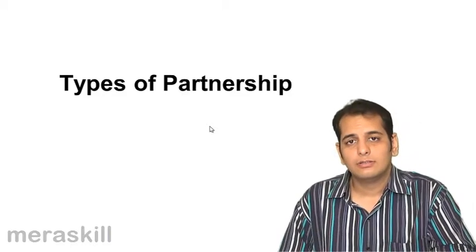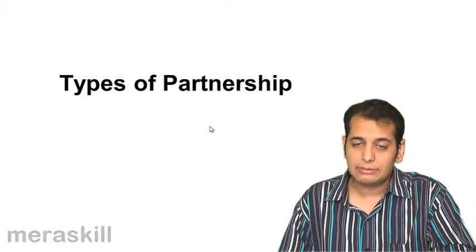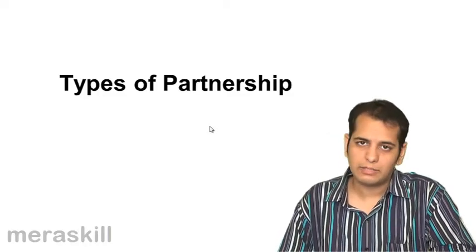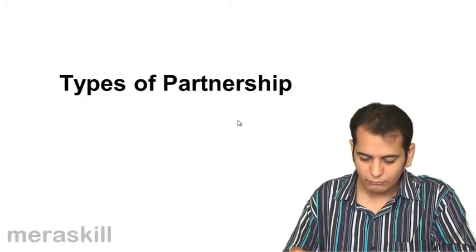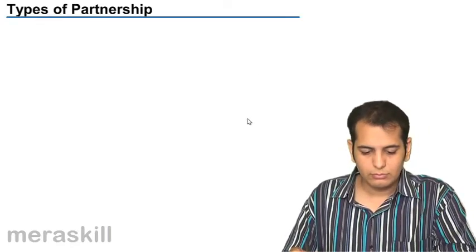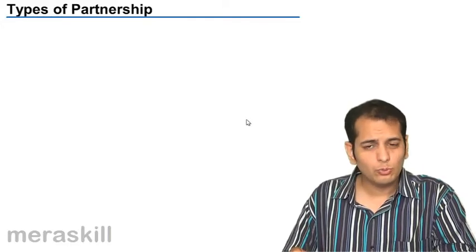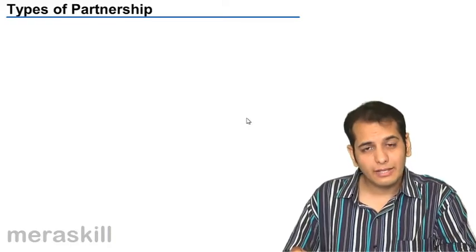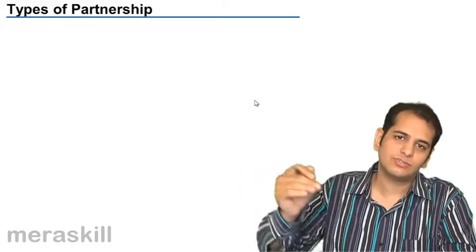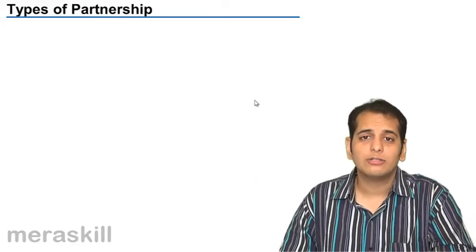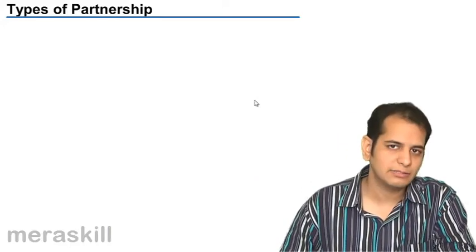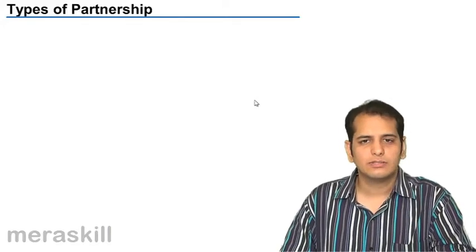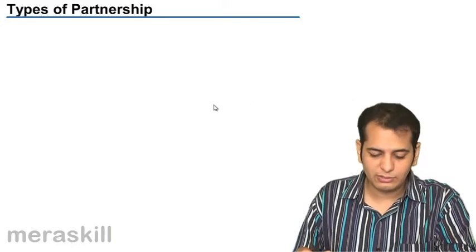Now, let's do the topic: types of partnership. What are the different types of partnership? There are two types of partnership. These two types of partnership regulate the existence of partnership — that is, how long will the partnership survive, how long will the partnership exist. So, on the basis of existence, these two types are derived.